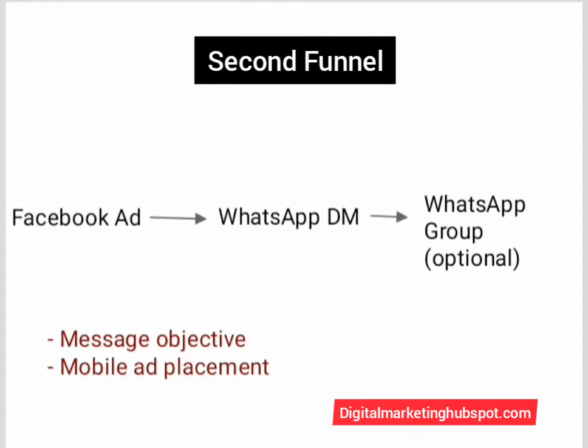The next funnel goes from Facebook to your WhatsApp DM. From your WhatsApp DM you can then send them to a group — for example if you are holding a class — or you can start marketing and selling to them directly. This is another simple funnel people use. With this funnel, Facebook will automatically send them to your WhatsApp, and you must integrate your WhatsApp to your Facebook page and Instagram page.